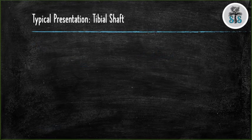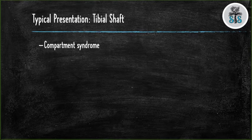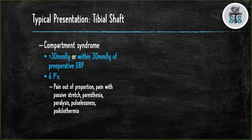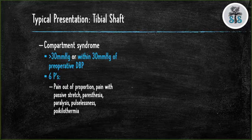These fractures are associated with compartment syndrome, which we will again review. Compartment syndrome is defined as a pressure greater than 30 mmHg or within 30 mmHg of the preoperative diastolic blood pressure. Compartment syndrome can be remembered by the six Ps: pain out of proportion, pain with passive stretch, paresthesias, paralysis, pulselessness, and poikilothermia.